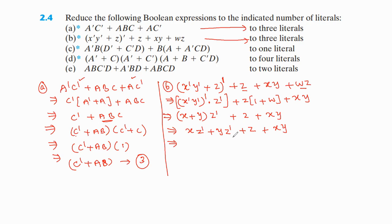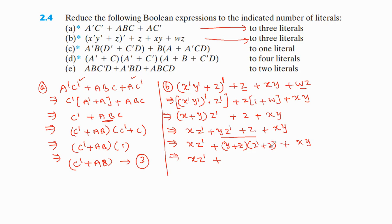Now simplify this equation again. In the terms xz' and yz', observe there is z' and z. Using the distributive property: xz' + y(z' + z). Since z' + z = 1, the remaining term is y + z, plus xy.